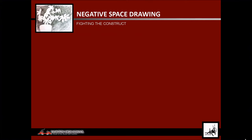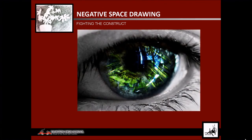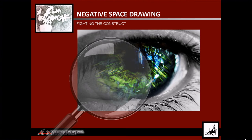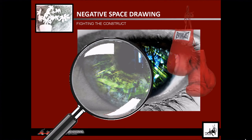Negative space drawing fights the construct by forcing you to look at and see things differently. By focusing on the negative space — which your construct generally ignores — it doesn't allow that construct to interfere with accurate drawing of the positive space. If you get the negative space right, the positive space will be right. But you're not used to doing it that way — that's how it fights the construct.